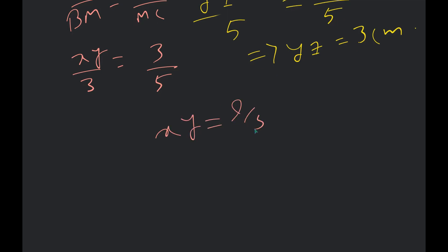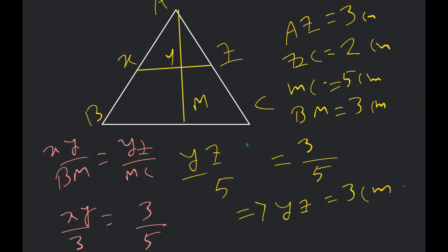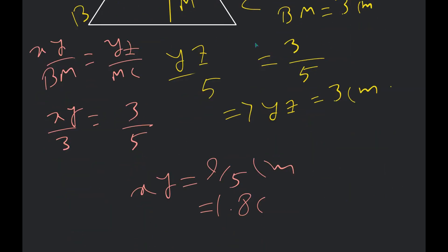Can you check the answer? Yes sir, it is 1.8 — nine over five, that is correct. Now, where do you have doubt? I cannot understand the similarity and ratio thing. You have to use the properties of triangles: this ratio is always equal to this ratio — point one. Second, this ratio is always equal to this ratio. Third, this ratio is always equal to this ratio. Remember these three. Yes, I understand. Any more doubt? No sir, thank you so much.